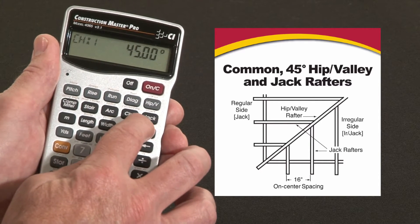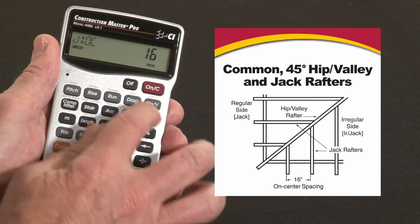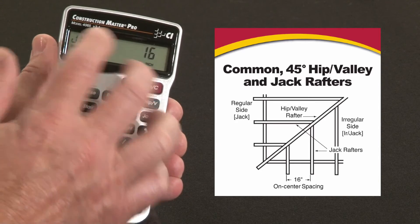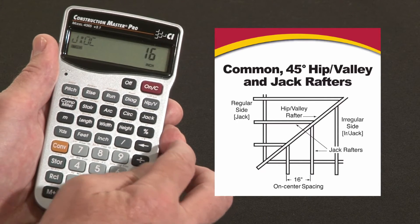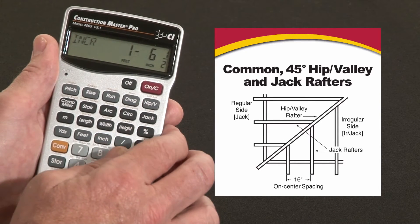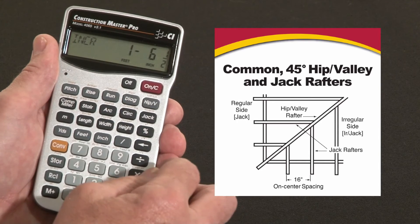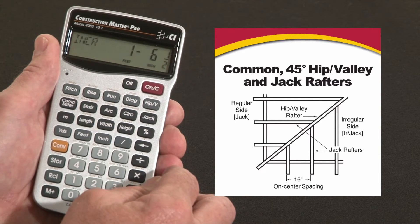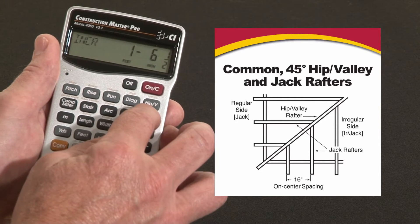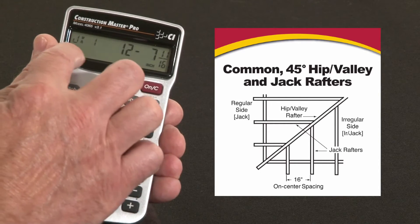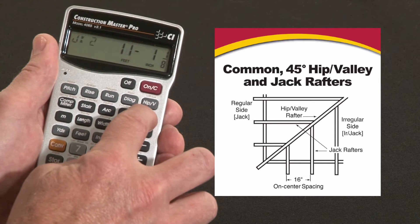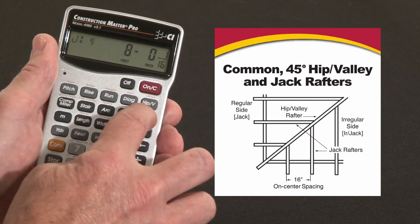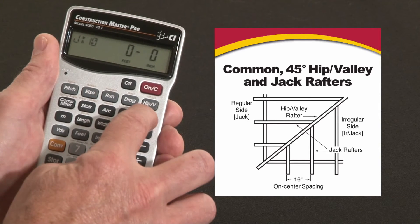Pressing the jack rafter key shows a couple of things. The first press shows that our on-center spacing is stored — the default is 16 inches. You can change that to whatever you want, but for this example that'll work. The next press shows you the increment — that's the amount of change in length from one jack to the next. Starting from the common, jack number 1 is going to be 12 foot 7 and 11 sixteenths. Repeated presses of this key gives us the length of each and every jack all the way down to the corner.